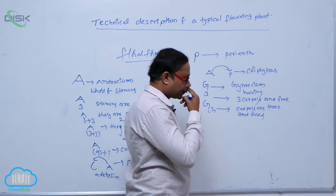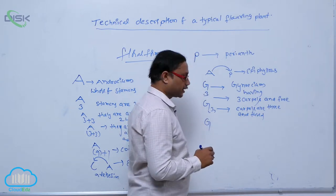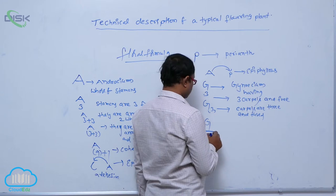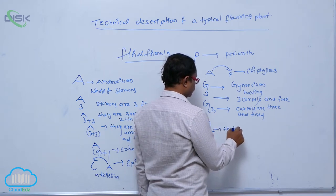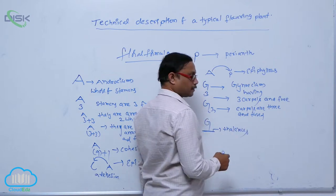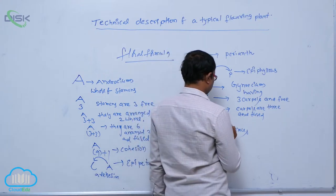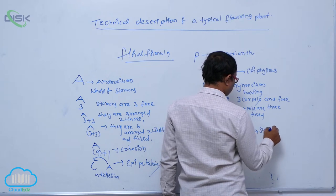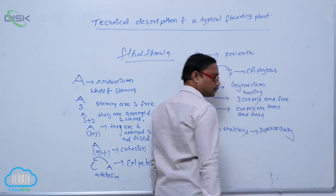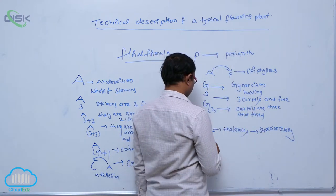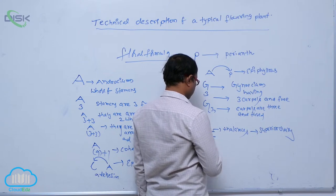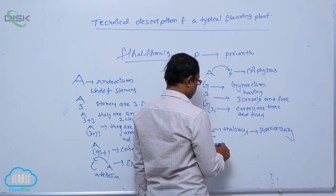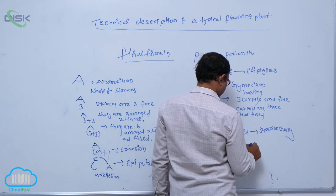In the gynoecium part, the line below indicates the thalamus. If the gynoecium is present above the thalamus, that is the indication of a superior ovary. The line above indicates that the gynoecium is present above the thalamus, indicating a superior ovary.